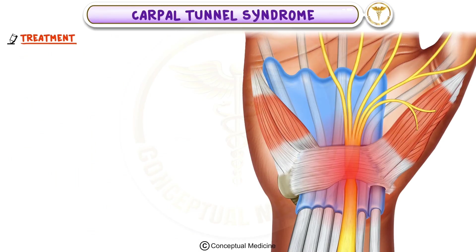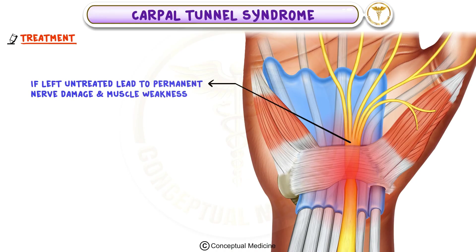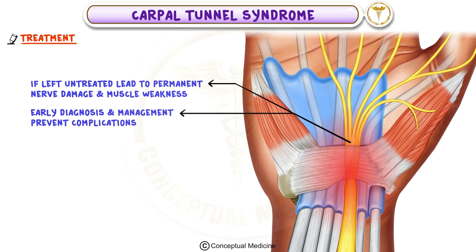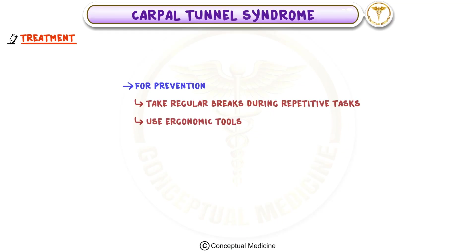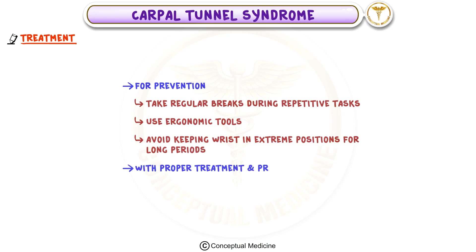It's important to note that if left untreated, carpal tunnel syndrome can lead to permanent nerve damage and muscle weakness. Early diagnosis and management can prevent complications and help patients return to their normal activities. For prevention, patients should take regular breaks during repetitive tasks, use ergonomic tools, and avoid keeping the wrist in extreme positions for long periods. With proper treatment and precautions, most patients experience significant relief from symptoms.